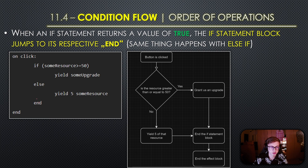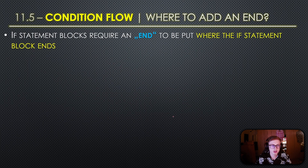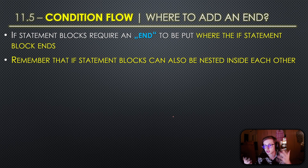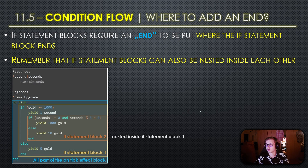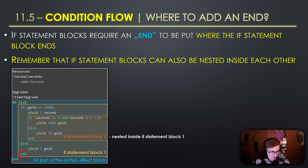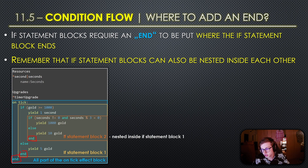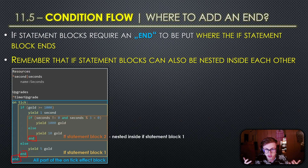If statement blocks require an end where the block ends, but they can also be nested inside each other. In this more advanced example, one end closes the effect block, the end above it closes if statement block one, and another end closes if statement block two which is nested inside if statement block one. Knowing where to place the end can be tricky, as the game will not warn you if it's in the wrong place - your game can load but if statements can produce incorrect and confusing results.